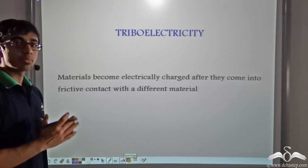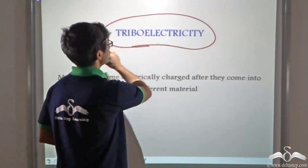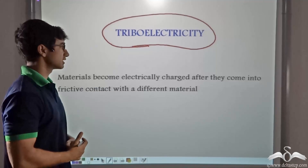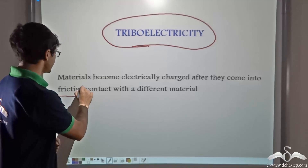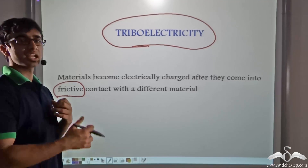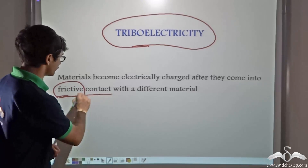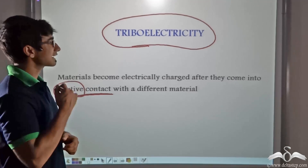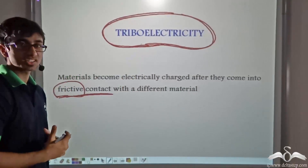When one body is rubbed with another, this has a scientific term: triboelectricity. Materials that become electrically charged after they come into frictive contact with another material — frictive meaning direct contact or rubbing — such as a glass rod rubbed with silk or a balloon rubbed with hair. That kind of contact is known as frictive contact, and the electricity generated due to which bodies acquire charges after rubbing is known as triboelectricity.